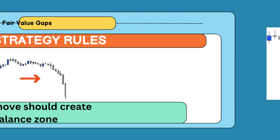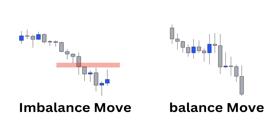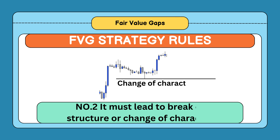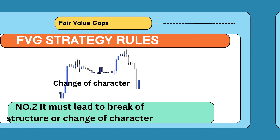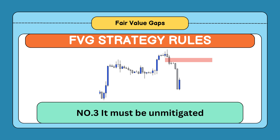These are examples of imbalance and balance moves. Rule two: it must lead to a break of structure or a change of character. A change of character or break of structure is the first clue the market gives us about whether it will continue in the same direction or reverse. Rule three: it must be unmitigated. Fair value gaps are one-time use, so we are looking for trading opportunities when price taps into the fair value gap for the first time.